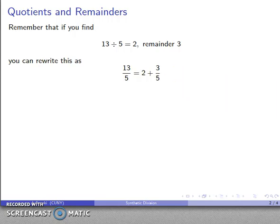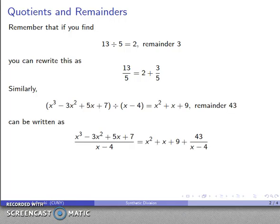Similarly, algebra is generalized arithmetic, so anything we do in arithmetic, turning a quotient into a statement about fractions, we can also do in algebra. So if I do this division, and I find I get quotient x squared plus x plus 9, remainder 43, I can rewrite this as quotient plus remainder as a fraction, 43 over x minus 4.